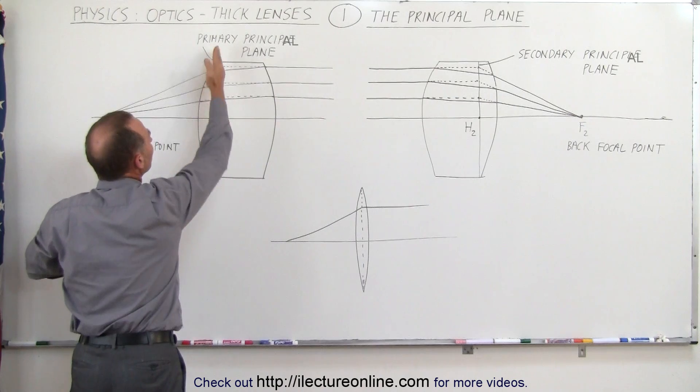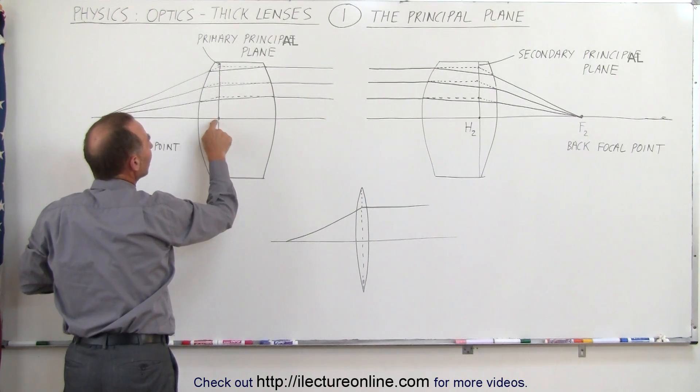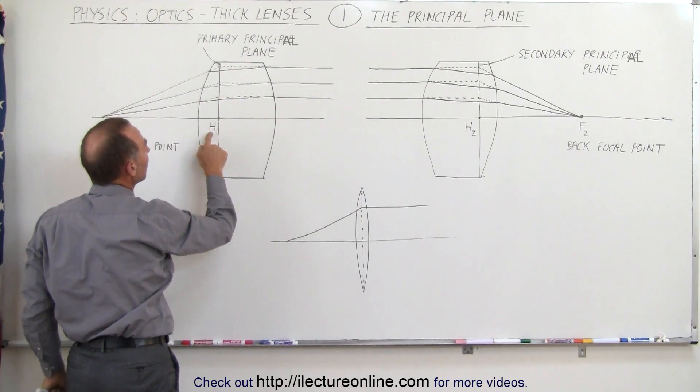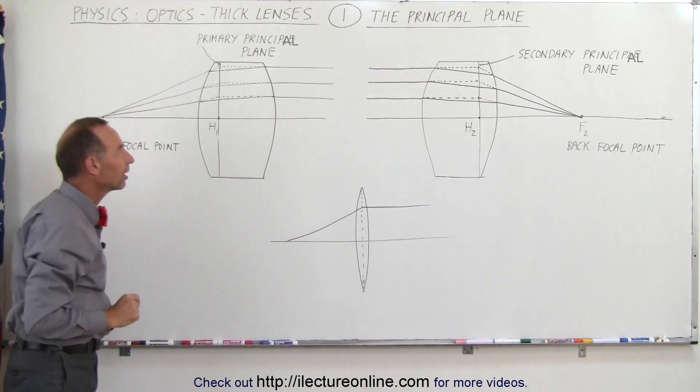And the point on the optical axis through which the plane goes we call that the primary principal point on the front of the lens.